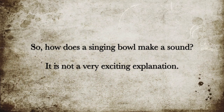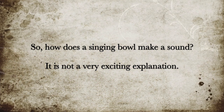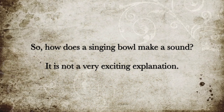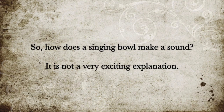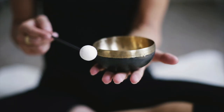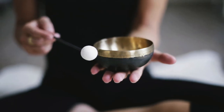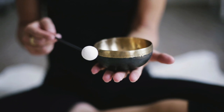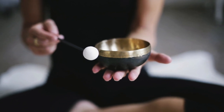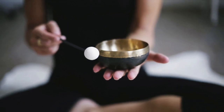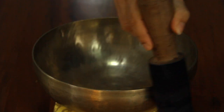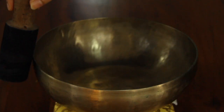So how does a singing bowl make a sound? When you strike a singing bowl, the wall of the bowl vibrates and the vibrational energy travels through air. When you rub the stick on the rim of the singing bowl, it causes friction, and friction causes vibration, which causes sound.